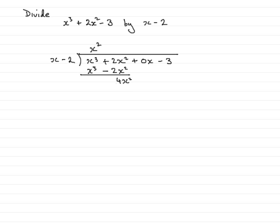Bring down the next term, which in this case is 0x. We'll just bring that down. You don't have to write the arrows in, I'm just doing that just to remind you. So we have plus 0x.